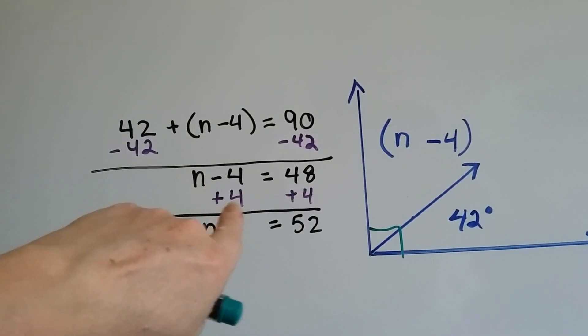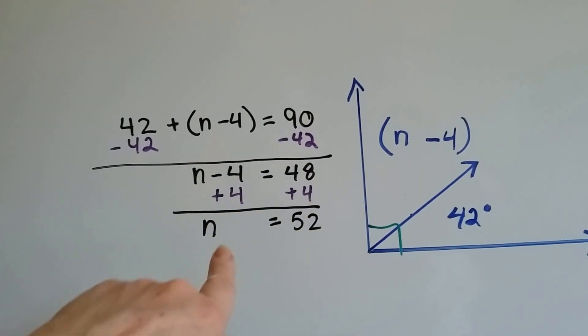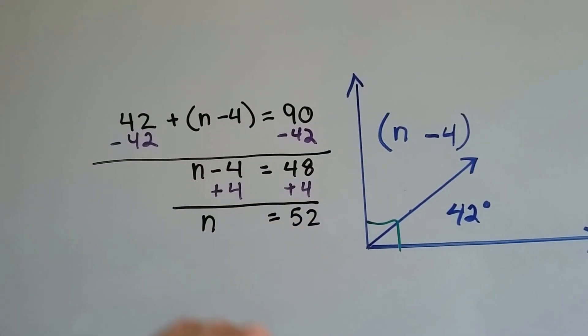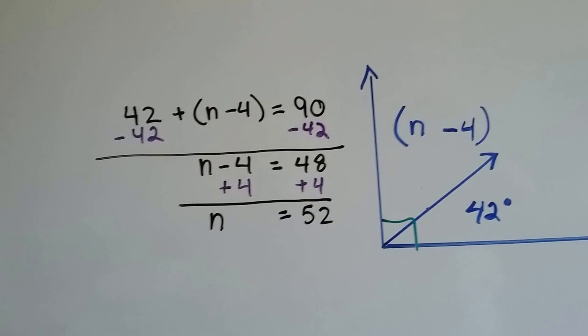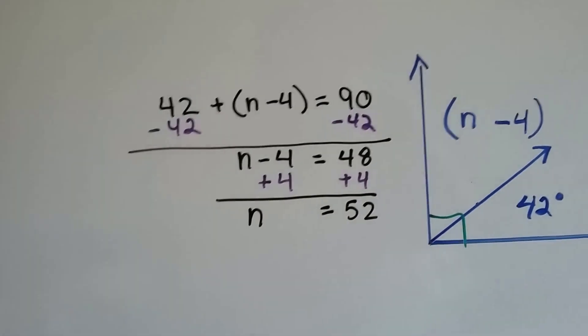And that's going to give us n minus 4 is equal to 48, because 90 minus 42 is 48. So now because it's a minus 4, we add 4 to each side, and then we end up with n is equal to 52. So we know that n is 52.